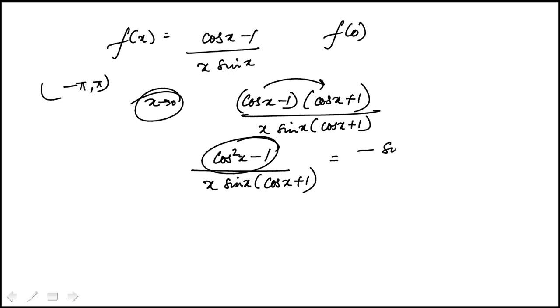This is minus sine squared x. So we have minus 1 over cosine x plus 1. And I have a sine x here, so that becomes sine x. Then sine x over x.